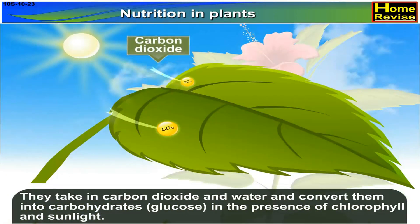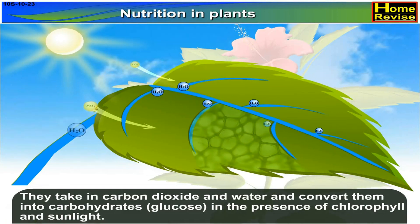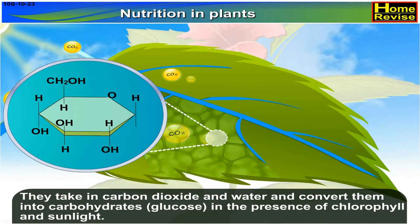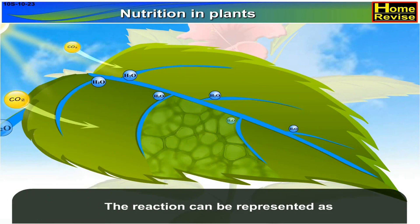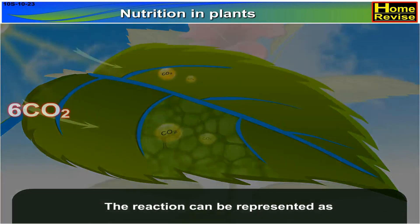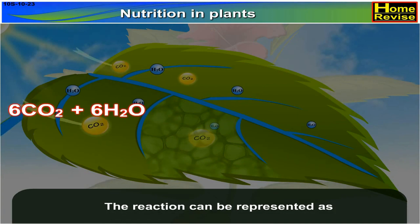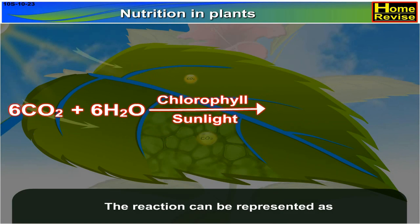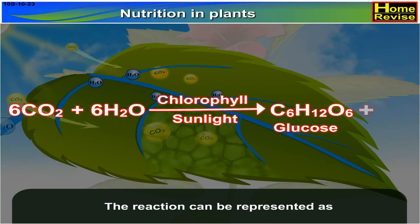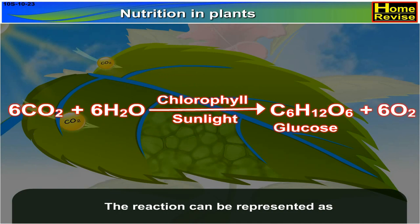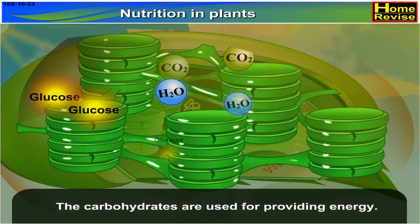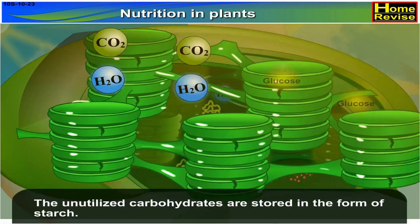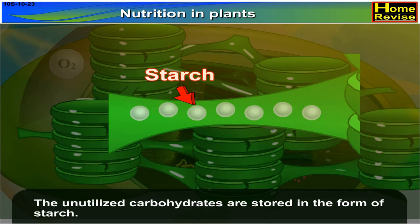They take in carbon dioxide and water and convert them into carbohydrates — that is glucose — in the presence of chlorophyll and sunlight. The reaction can be represented as: 6CO2 + 6H2O, in the presence of chlorophyll and sunlight, gives C6H12O6 (glucose) + 6O2. The carbohydrates are used for providing energy. The unutilized carbohydrates are stored in the form of starch.